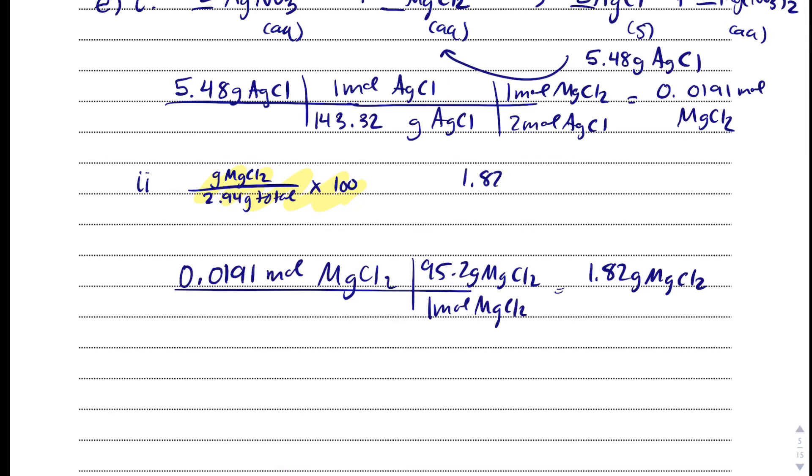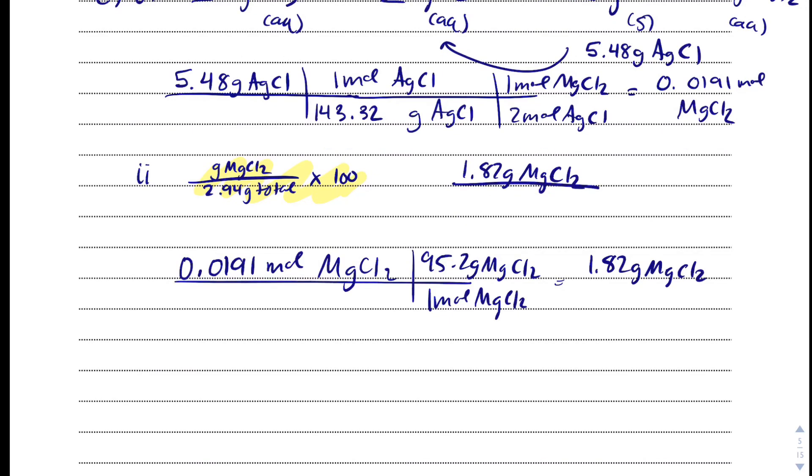Now, there's 1.82 grams of MgCl2 for every, or in the whole mixture. I don't know if I've done this right, but I feel good about it because I don't want to get a number higher than 2.94 grams of the total because it doesn't make sense that we could have over a 100% composition of magnesium chloride here. So, times it by 100, and I get 61.9% magnesium chloride.